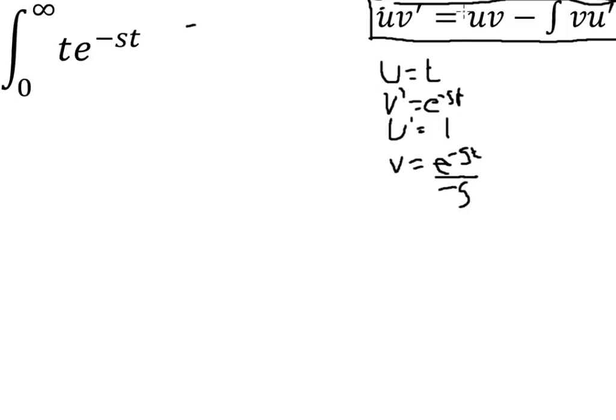So we need to form this bit here. So uv is t e to minus st over minus s between the limits of infinity and 0.